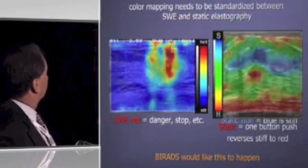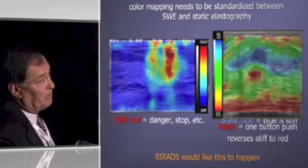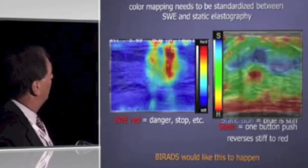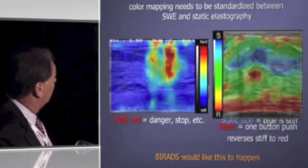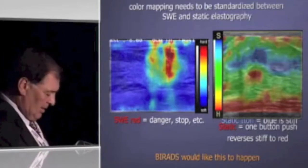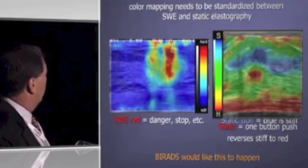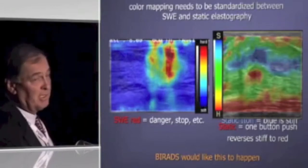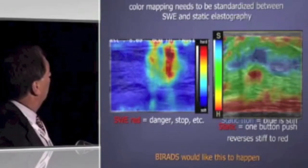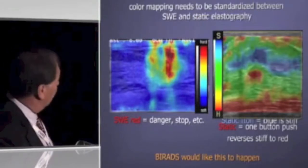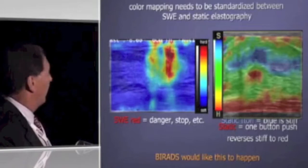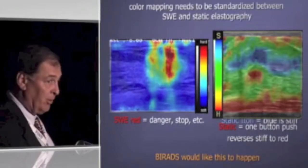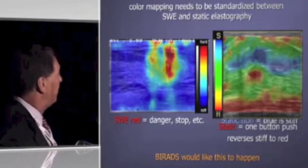On shear wave elastography we're mapping stiff as red, while on static elastography we're showing stiff as blue. This was the protocol established by Ito on the Hitachi machine, and it's become pretty widespread. This is something the ACR BI-RADS committee would like to see handled. We can flip either one — stiff to blue on supersonic, or stiff to red on the static elastography machine — but at some point we've got to standardize what is stiff, because we can't have two different colors mean stiff in the ACR BI-RADS lexicon. Somebody's going to have to win, and somebody's going to have to lose on that one.